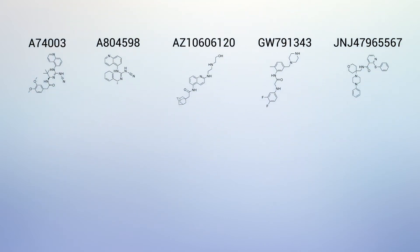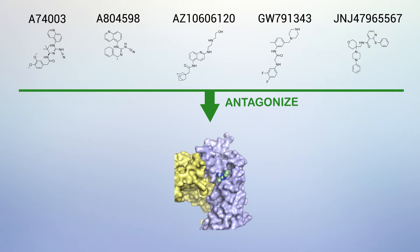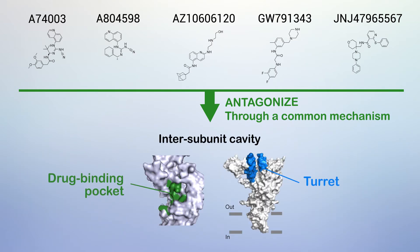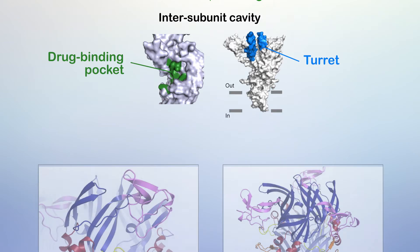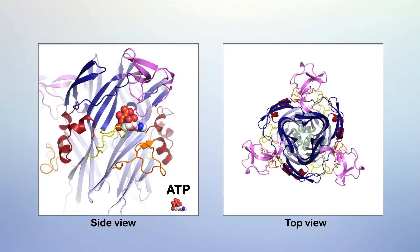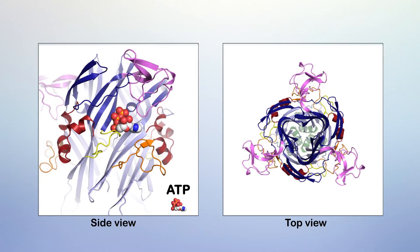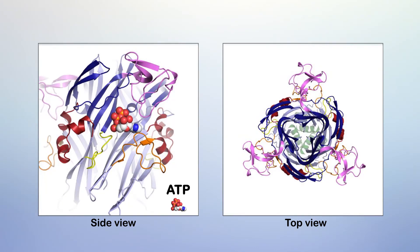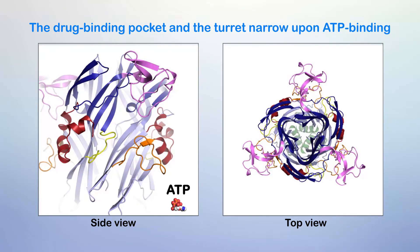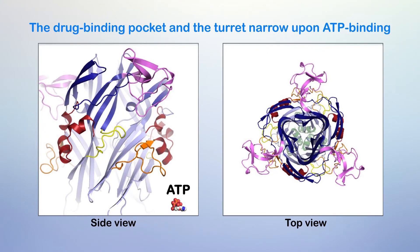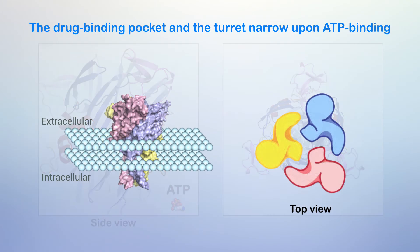Based on these data, we propose that the five studied drugs antagonize the P2X7 receptor through a common mechanism, and that the unique inter-subunit cavity may be a critical locus for functional regulation. Indeed, our electrophysiological studies demonstrated that P2X7 receptors undergo unique conformational rearrangements where both the drug binding pocket and the turret in the P2X7 receptor narrow upon ATP binding.